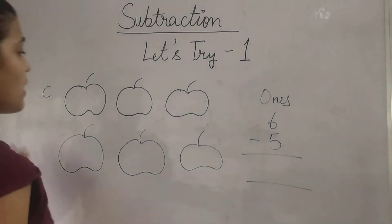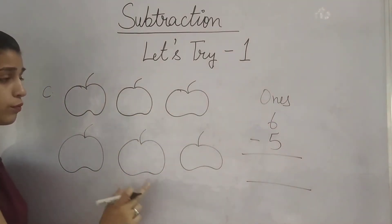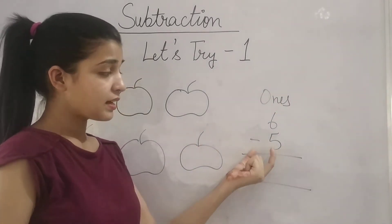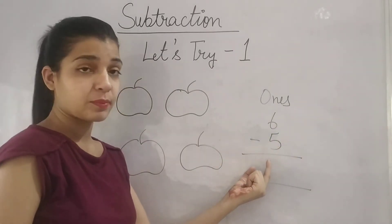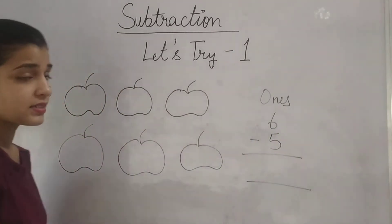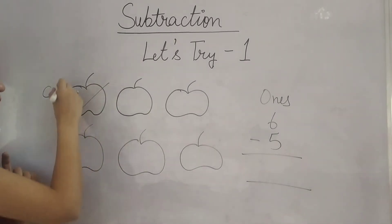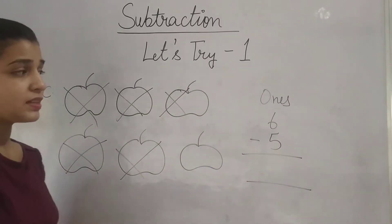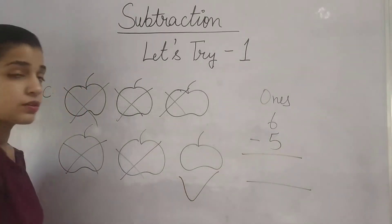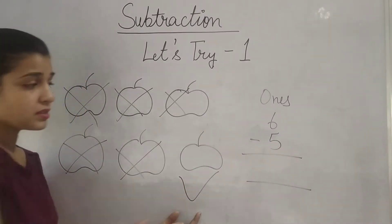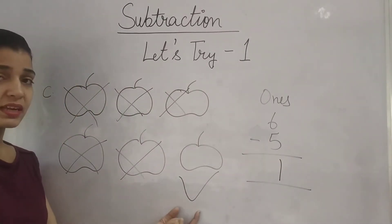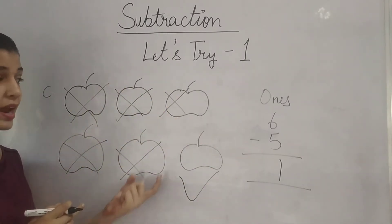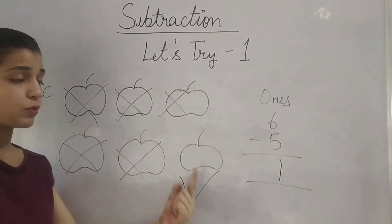Now come to the next part. You have 6 apples — 1, 2, 3, 4, 5, 6. This is the 1s column. You have to subtract 5 from 6. Count and cross out: 1, 2, 3, 4, 5. If we subtract 5 from 6, how much is left? Only 1 apple. We had 6 apples and after subtracting 5, we have only 1 apple.